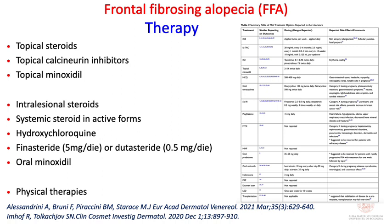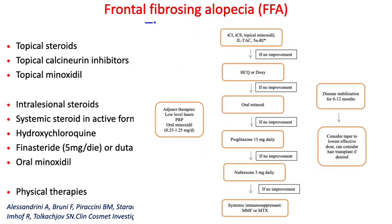One review nicely summarizes all systemic therapies in FFA and proposes a treatment algorithm: the first choice is always steroids in different forms based on disease activity, with minoxidil added to reduce miniaturization. If there is no improvement, hydroxychloroquine is the next step, followed by other therapies if needed. Physical therapies such as PRP and lasers remain controversial, and hair transplantation can be considered to reduce the empty space at the hairline.